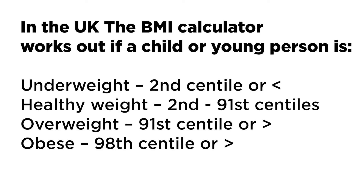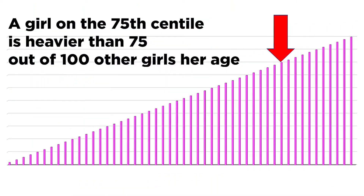In the United Kingdom, the BMI calculator works out if a child or young person is underweight on the 2nd centile or below, healthy weight between the 2nd and 91st centiles, overweight at the 91st centile or above, and obese at the 98th centile or above. A child's BMI is expressed as a centile to show how their BMI compares with children who took part in national surveys. For example, a girl on the 75th centile is heavier than 75 out of 100 other girls her age.